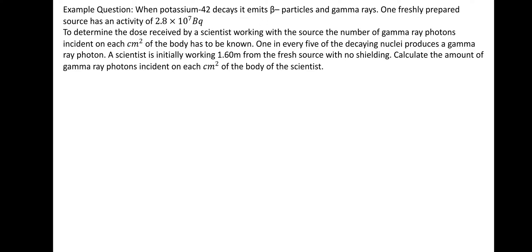So let's do this question together — unless you want to have a go, then please pause and try to figure it out. When potassium-42 decays, it emits beta particles and gamma rays. One freshly prepared source has an activity of 2.8 × 10⁷ becquerel. One in every five of the decaying nuclei produces a gamma ray photon. A scientist is initially working 1.6 metres from the fresh source with no shielding. Calculate the amount of gamma ray photons incident on each centimetre squared of the body of the scientist.